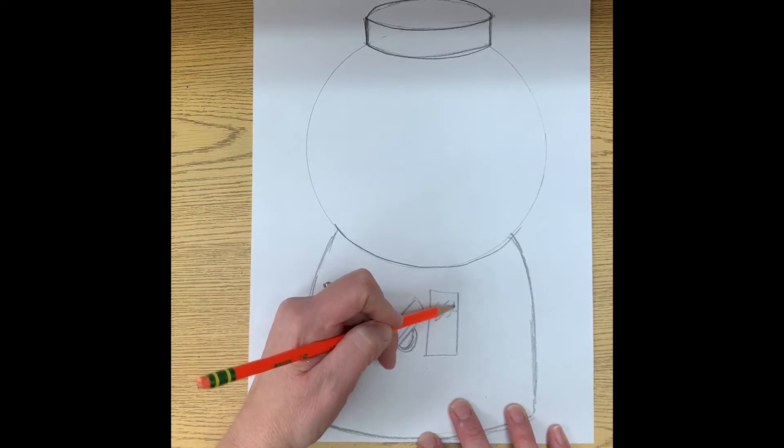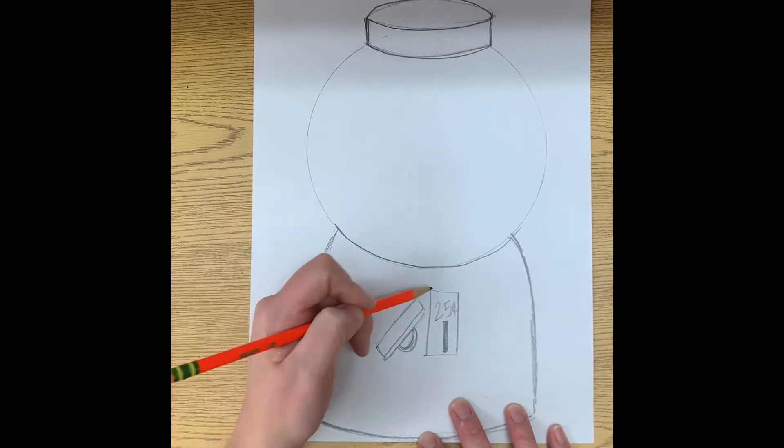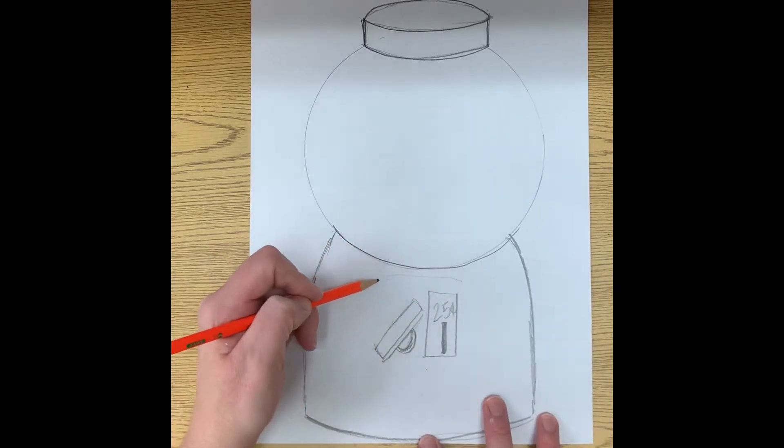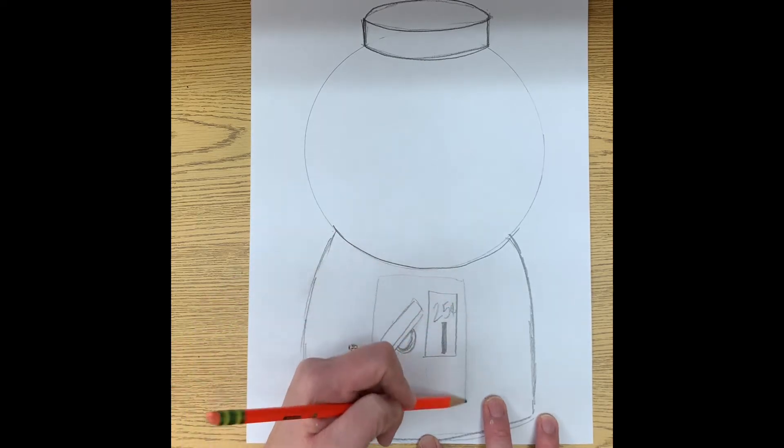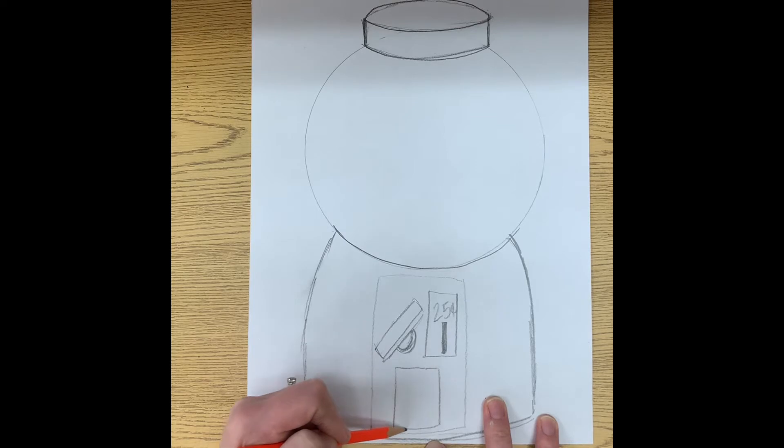Right. 25 cents. And then of course, place where you put your coin. You can get as creative with this as you want. I'm even going to put like a plate over this. And then, oh, I need a little door where my gumball comes out.